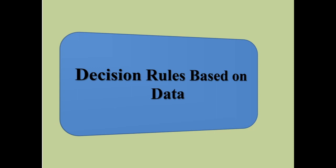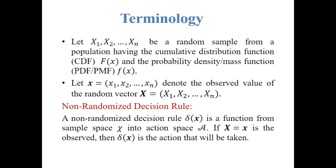We discuss the problem of decision theory when data is available — that means how we define different kinds of decision rules based on data. First, we discuss some terms used in decision theory. Let x1, x2, ..., xn be a random sample from a population having the cumulative distribution function F(x) and the probability density or mass function f(x).